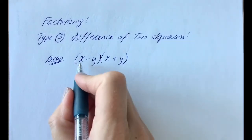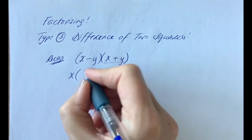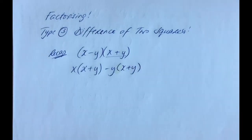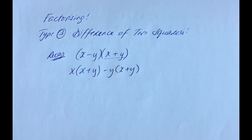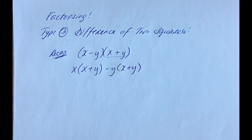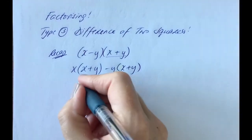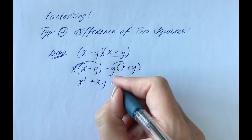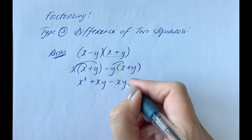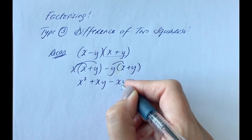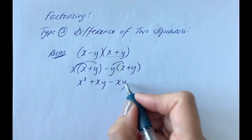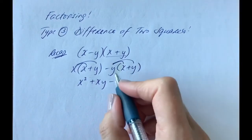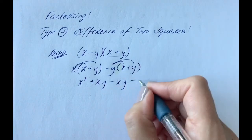Like before, you would take the first term, x, multiply it by the second bracket, x plus y, and take the second term and multiply it by the second bracket, x plus y. Multiplying out these brackets: x by x gives x squared, x by y gives xy, minus y times x gives minus xy — we put the x first in alphabetical order. And minus y by plus y is minus y squared.